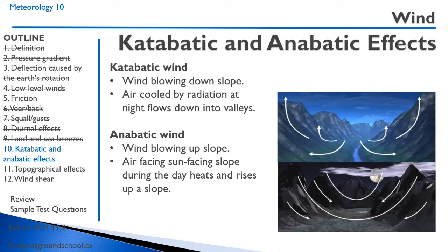In mountainous areas, we can have anabatic and katabatic winds. A katabatic wind blows down a slope — caused by air cooled by radiation at night, which sinks and flows down the valley. An anabatic wind occurs during the day on a sun-facing slope, where the sun heats up the mountainside and the air rises up the slope.